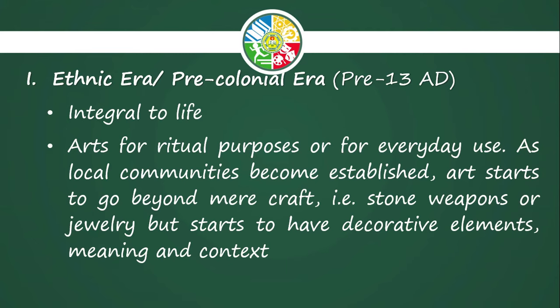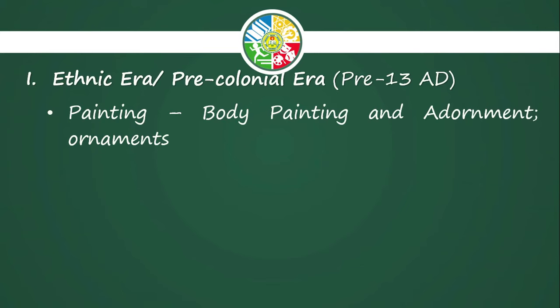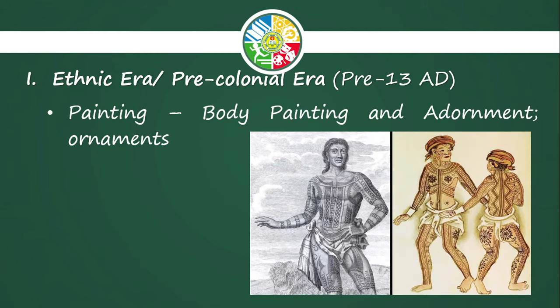For painting in the ethnic era, we have body paint and adornment — for example, ornaments. In the ethnic era, tattoos, body paintings, and ornaments are considered necessary for survival. They actually believed that these bring good luck — in other words, there is a hidden meaning. Each body painting and ornament has a meaning which symbolizes something, possibly luck or protection.